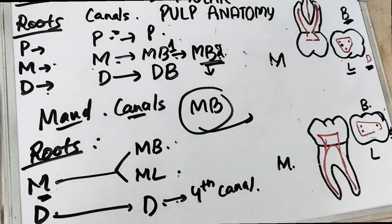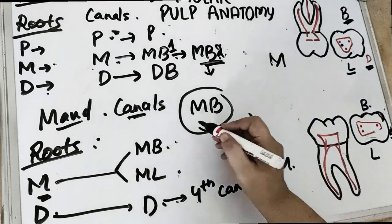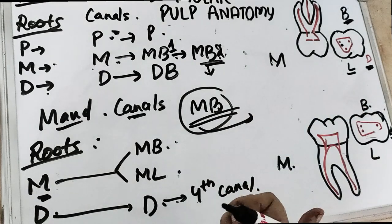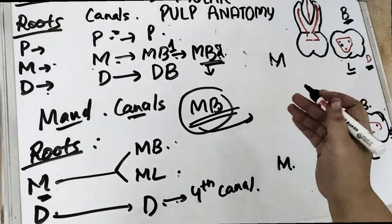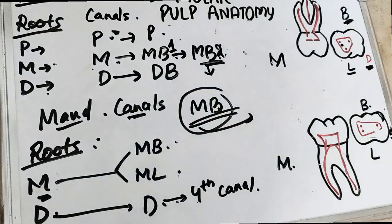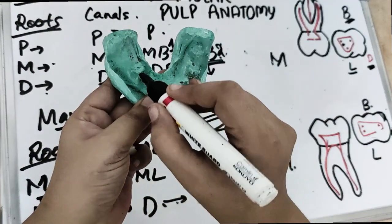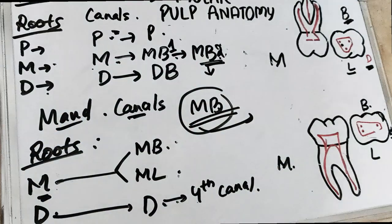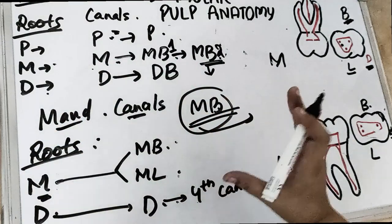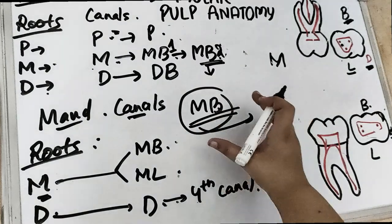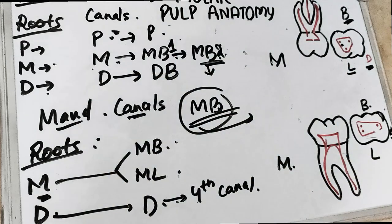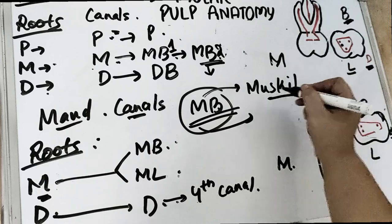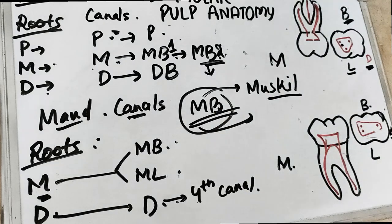This is a question asked for NEET and viva: which canal is most difficult to locate? It is the mesio-buccal canal. For those who understand Hindi, remember M for mushkil — mushkil means difficult — and M for mesio-buccal. So the mesio-buccal canal is the most difficult canal to locate in both maxillary and mandibular first molars.